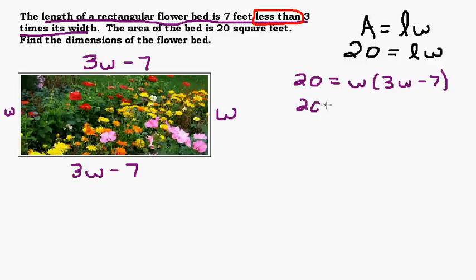Now I could have written that the other way. It wouldn't have mattered if I wrote 3w minus 7 times w. Length times width or width times length. That order doesn't matter because multiplication is commutative. The order doesn't matter. So there's our equation. That's really the big step right there is writing that equation.